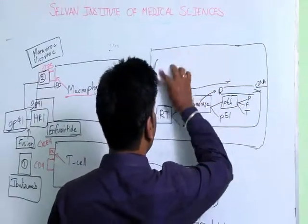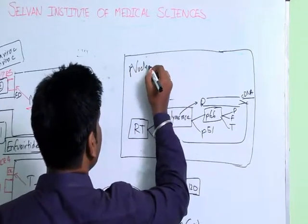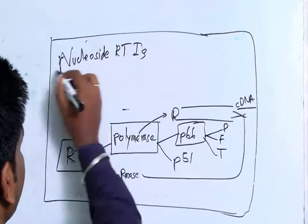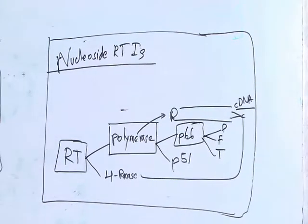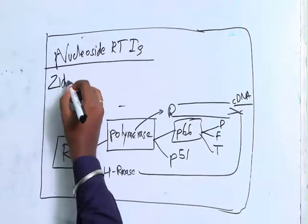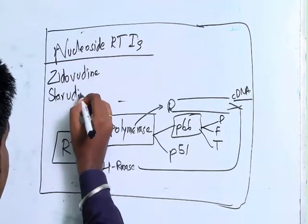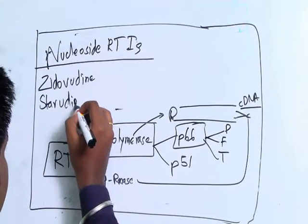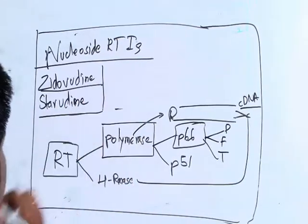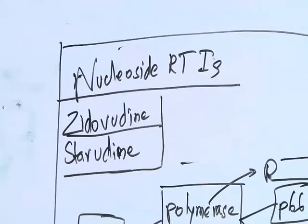These drugs are called nucleoside reverse transcriptase inhibitors. The important drugs that fall under this category are zidovudine, stavudine, didanosine, and others.